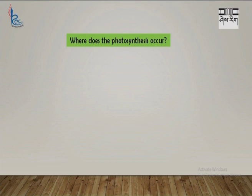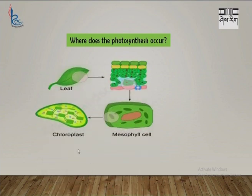Generally we say photosynthesis occurs in the leaves. But to be specific — remember you are a biology student, be specific — photosynthesis occurs in the chloroplast. If we study the structure of this leaf, it consists of upper epidermis covered by a cuticle which prevents loss of water, and lower epidermis which consists of stomata. In between these layers there are mesophyll cells arranged in two ways: upper ones are arranged compactly — we call them palisade mesophyll cells — and lower ones are loosely arranged — we call them spongy mesophyll cells. Meso means in between and phyll is related to the leaf.